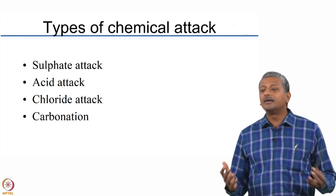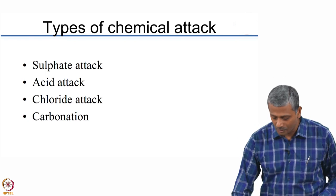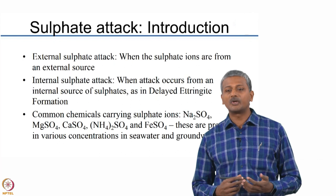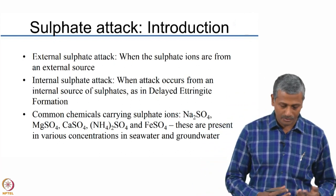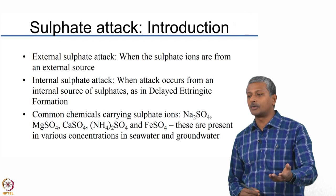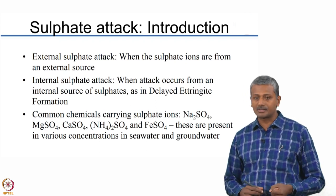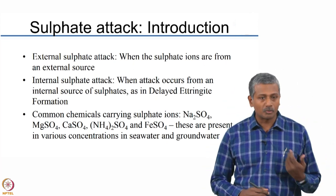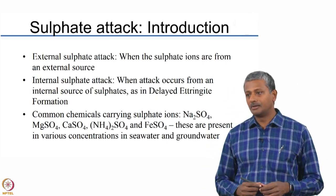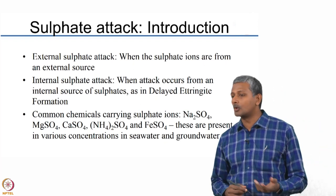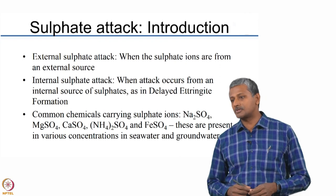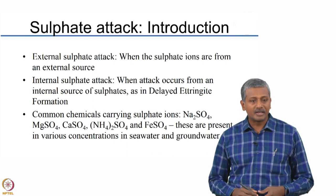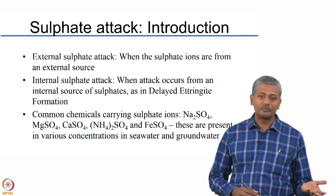Let us talk in more detail about sulphate attack, which is the main topic of this lecture. Sulphate attack is classified into external and internal. External is when sulphates come from an external source — for example, agriculturally polluted soil with fertilizers bringing in sulphates, soils with rich deposits of gypsum that slowly contribute sulphate to the concrete, or sea water which contains a mix of chloride and sulphate. Because of these multiple types of pollutants, the concrete quality gets degraded.